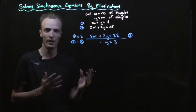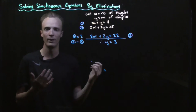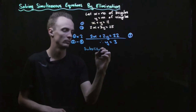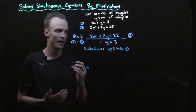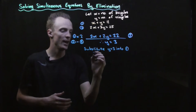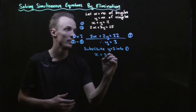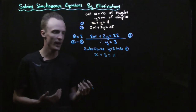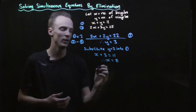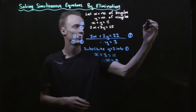We need to find the x value, so we substitute y equals 3 into one of our equations. I'm going to substitute into equation 1. Wherever we have y we replace it with 3: x plus 3 equals 11. Solving for x by subtracting 3 from both sides, my x value equals 8. The advantage of this method is we can check our solution, so let's do that.